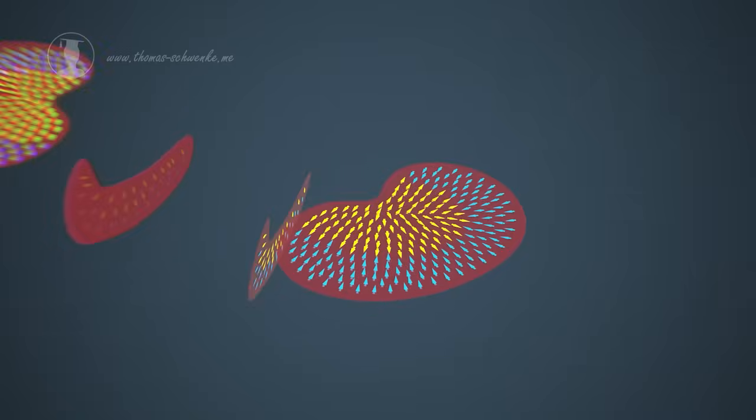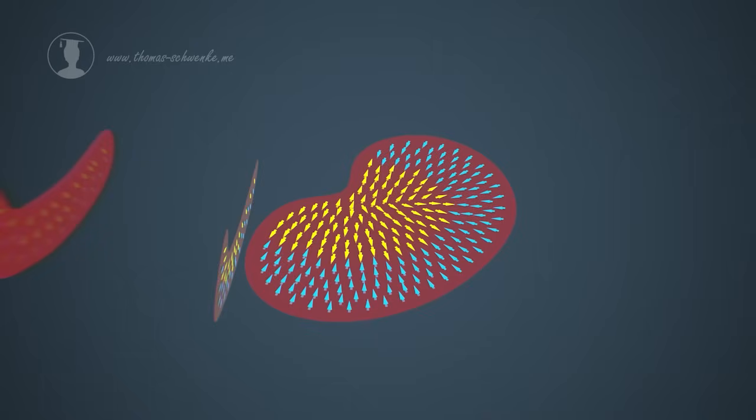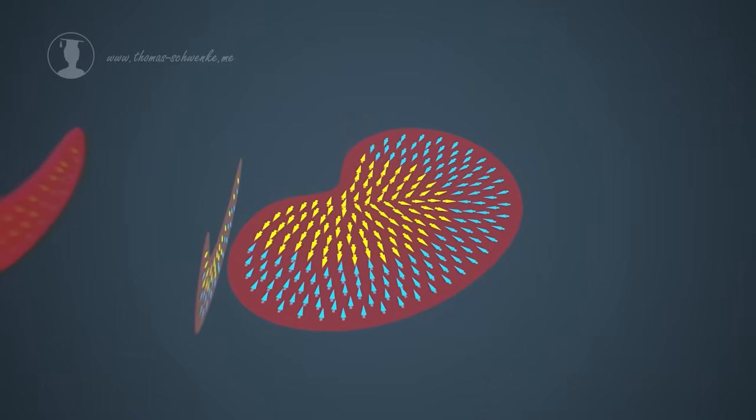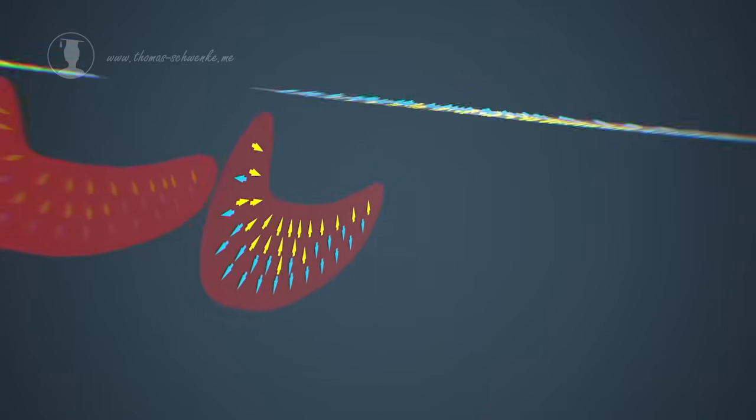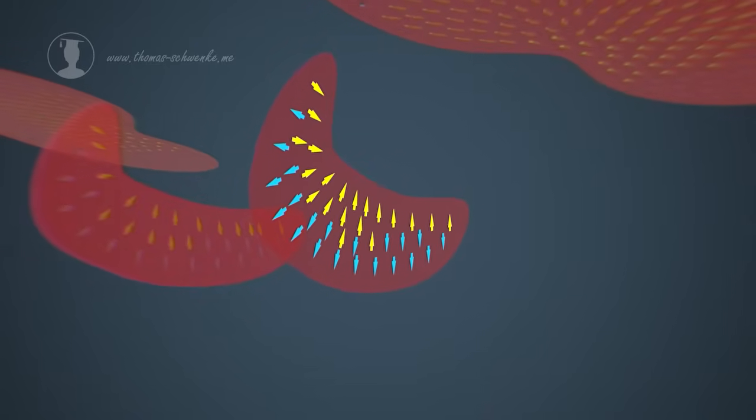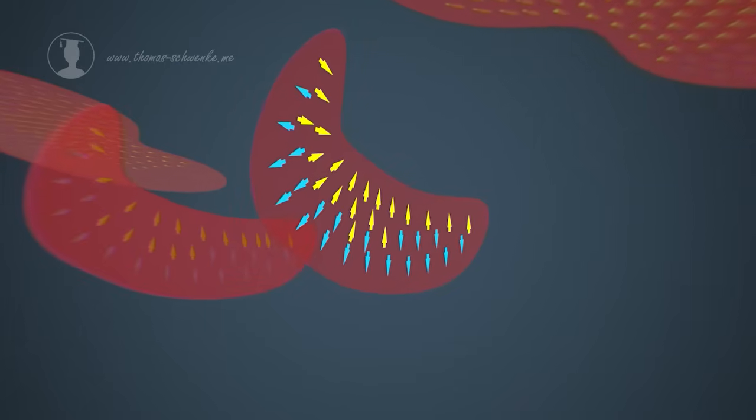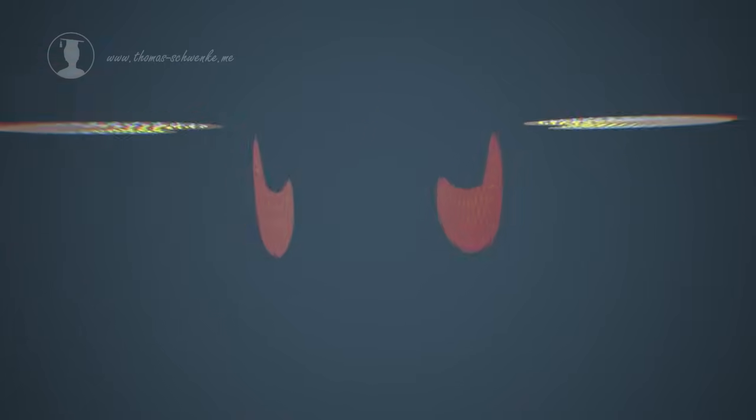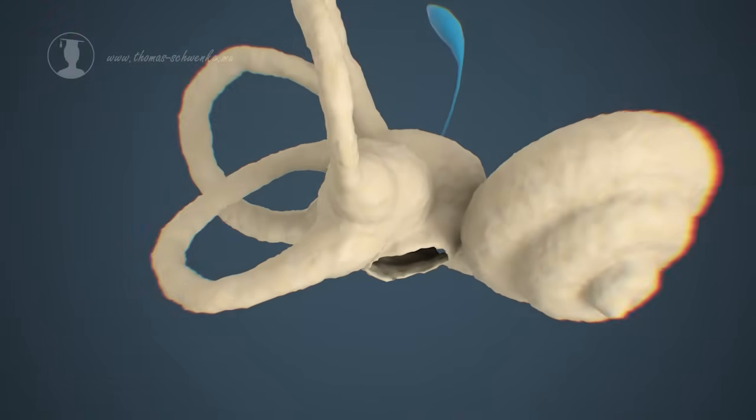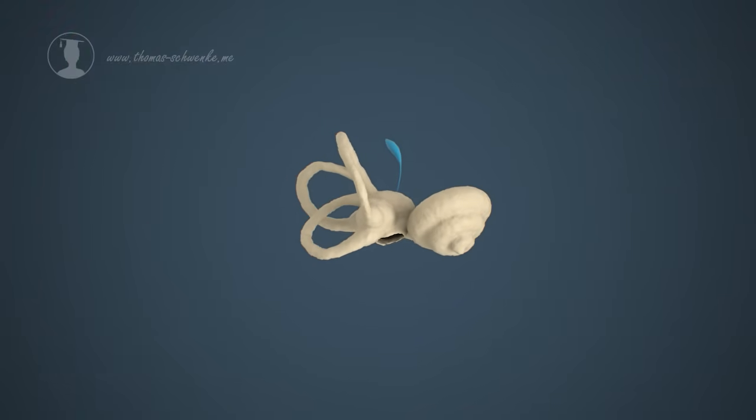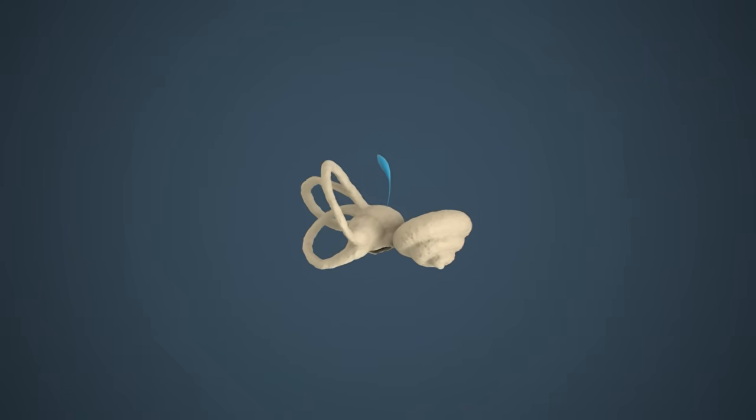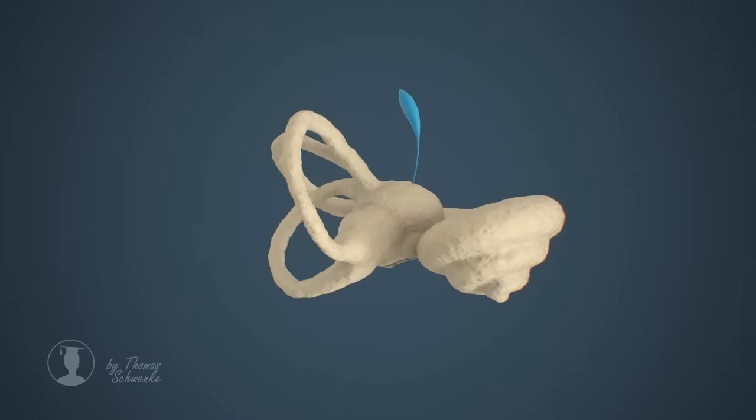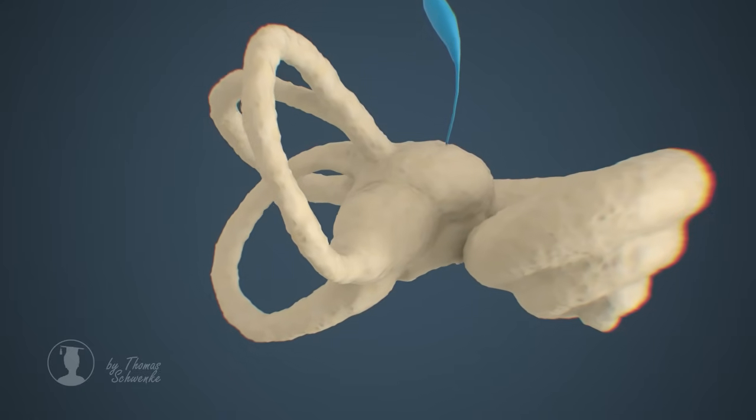The hair cells of the utricle are oriented in the direction of the striola. In contrast, the hair cells of the saccule are oriented away from the striola. This enables the precise calculation of head position and linear acceleration. However, utricle and saccule can hardly sense rotational movements of the head. The three semicircular canals, which have ampullae, are necessary for rotational accelerations.